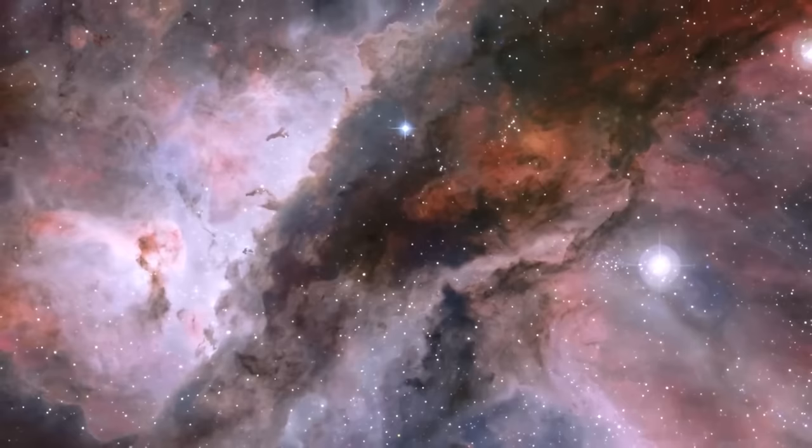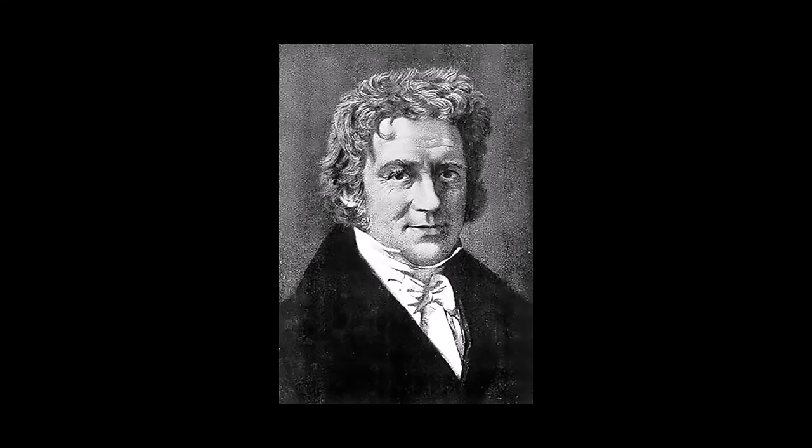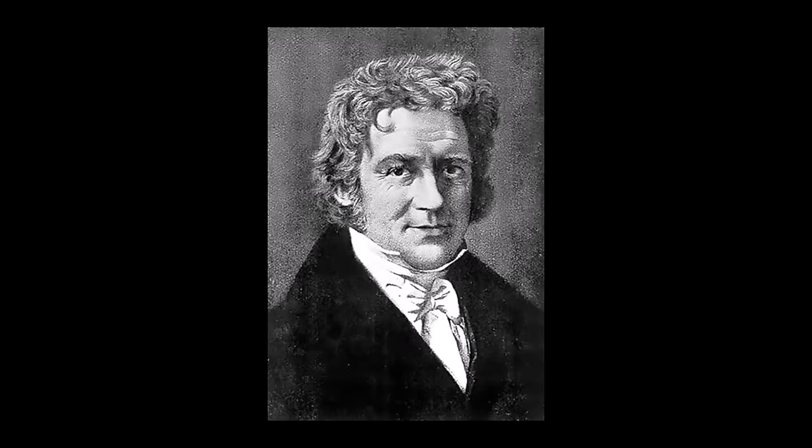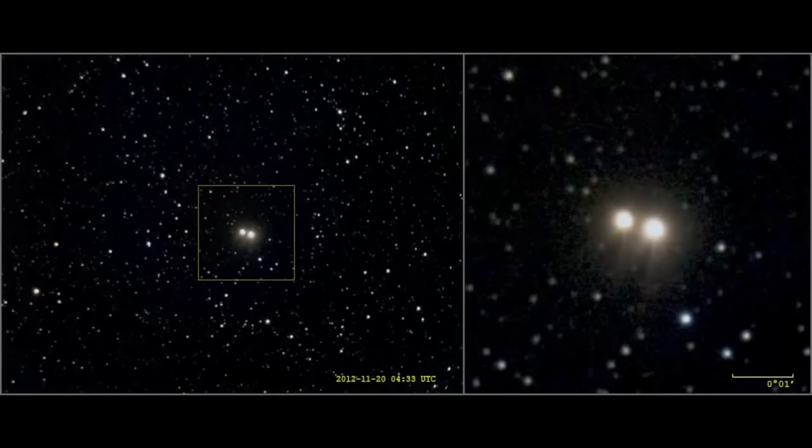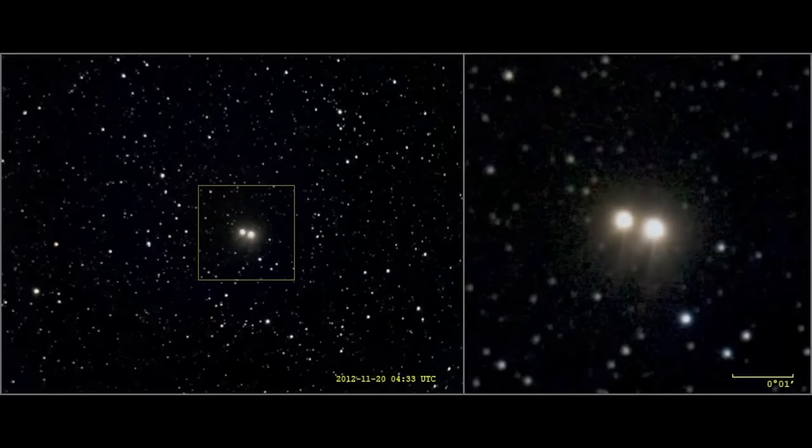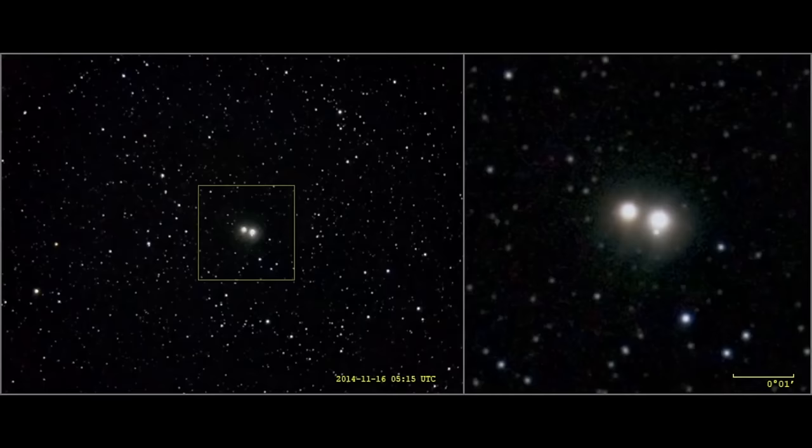Friedrich Bessel, a German astronomer and mathematician, contributed significantly to the field of astronomy in the early 19th century. His observations of the star 61 Cygni led to the first accurate measurement of the distance to a star through stellar parallax. This groundbreaking achievement laid the groundwork for determining the vast distances between stars in our galaxy.